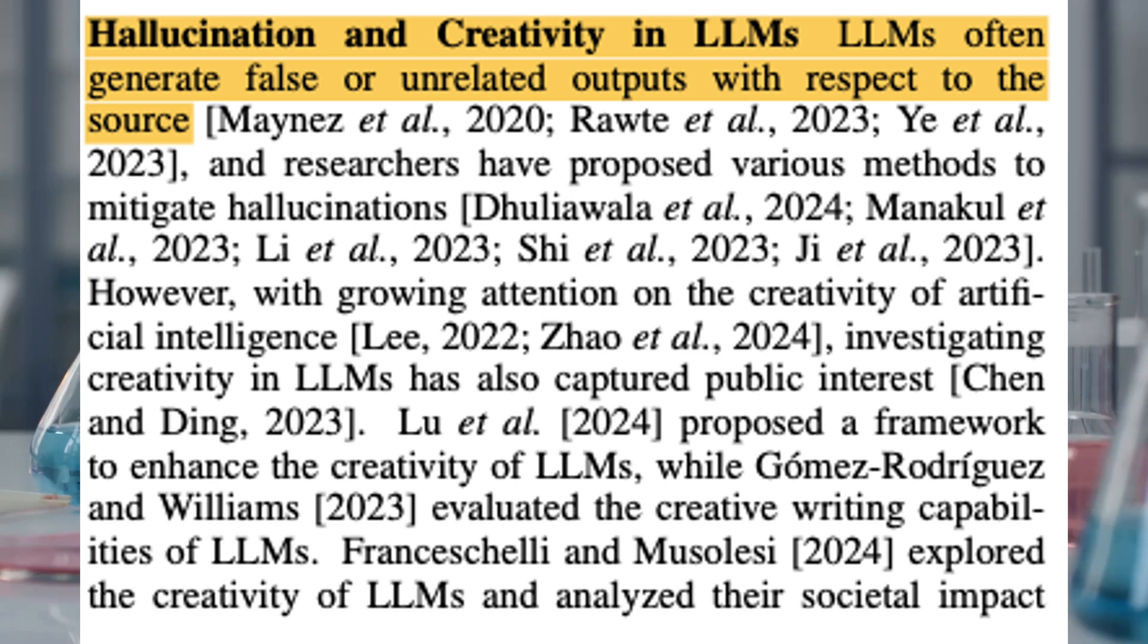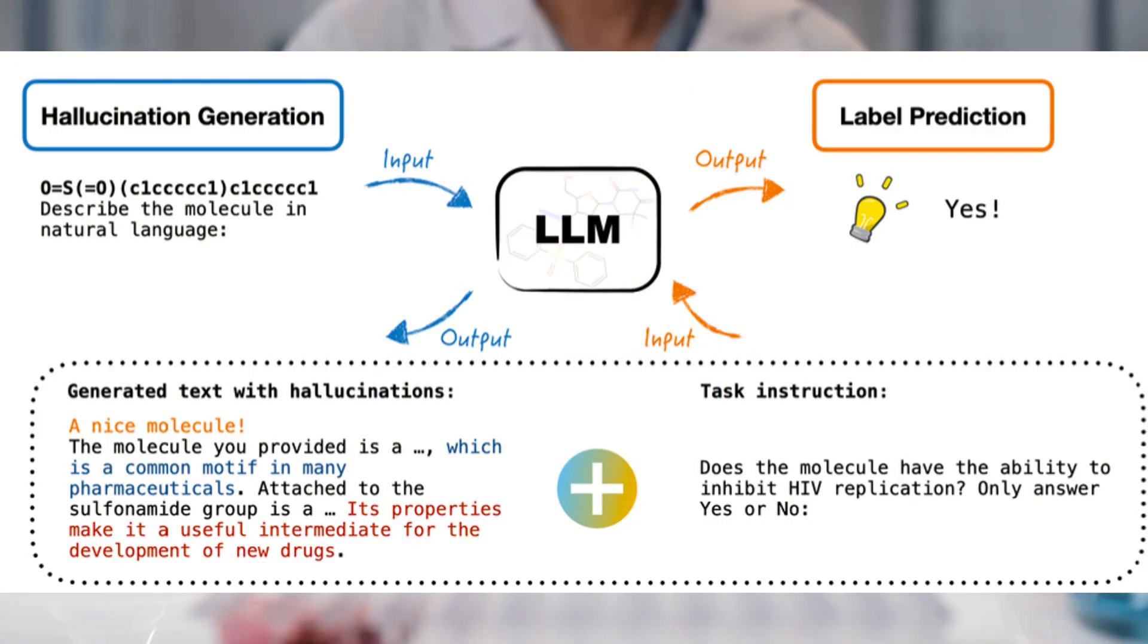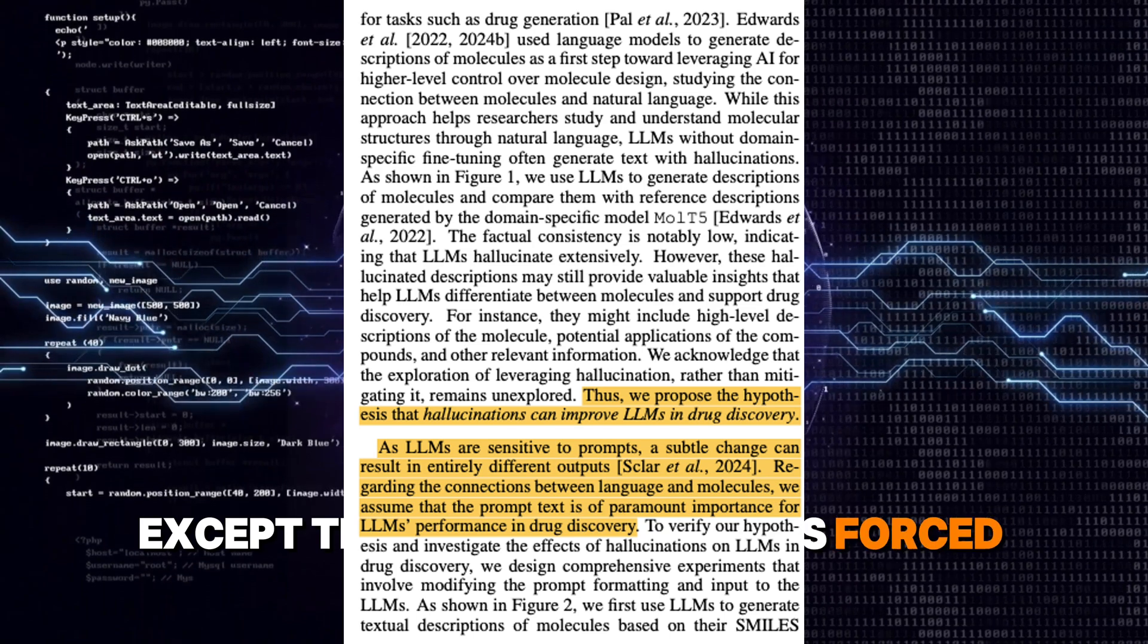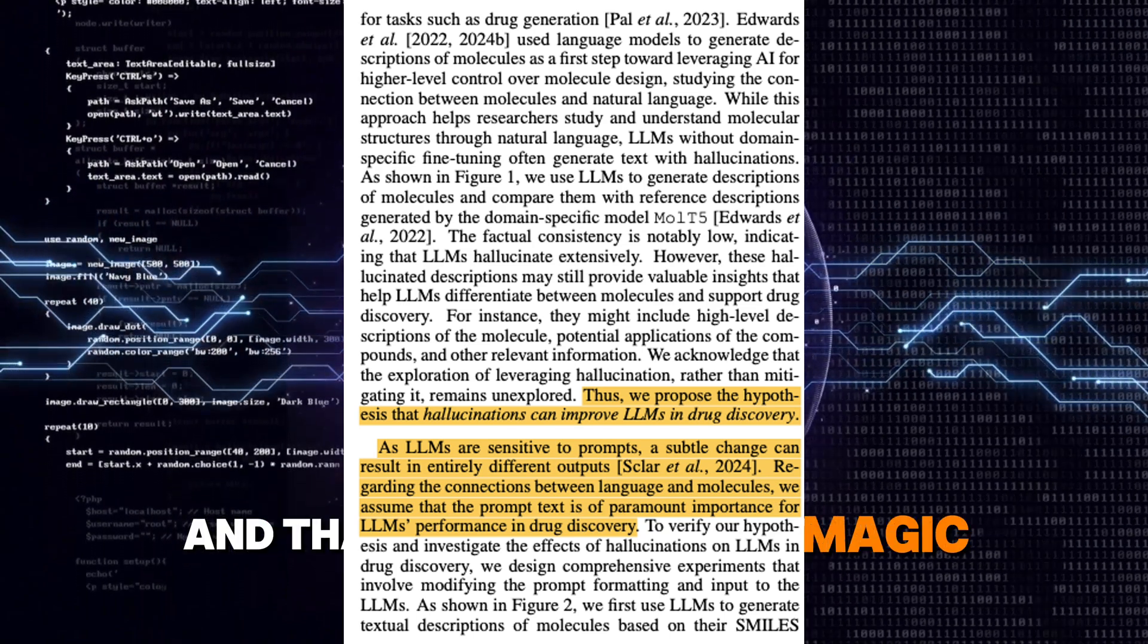That means that sometimes it would add details that weren't exactly correct. Like saying a molecule contained hydrogen when it actually didn't. Sounds like a bad idea, right? Except those hallucinations forced the AI to think differently and that's what made the magic happen.